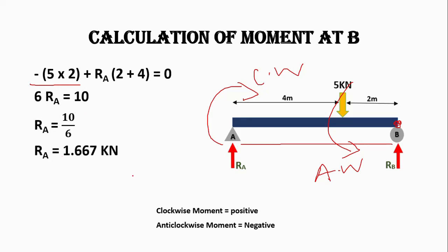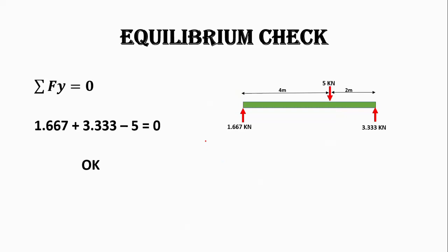RA = 1.667 kilonewtons. Let's check for equilibrium using the condition ΣFy = 0, meaning the sum of all vertical forces equals zero. We consider upward forces as positive and downward as negative. So 1.667 + 3.333 − 5 = 0, which confirms our support reactions are correct.